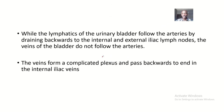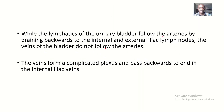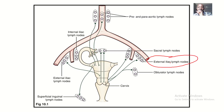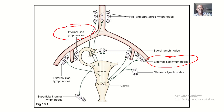In this short tutorial we will be talking about the lymphatic drainage of the urinary bladder. The lymphatic drainage of the urinary bladder actually follows the arterial supply. Around this side we have the external iliac artery and here we have the external iliac lymph nodes, then we have the internal iliac artery and here we have the internal iliac lymph nodes.